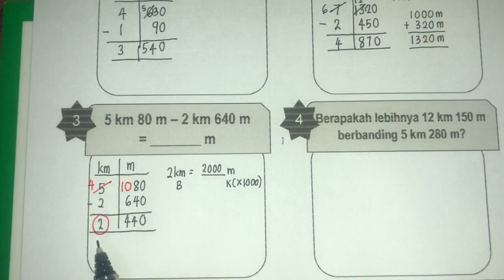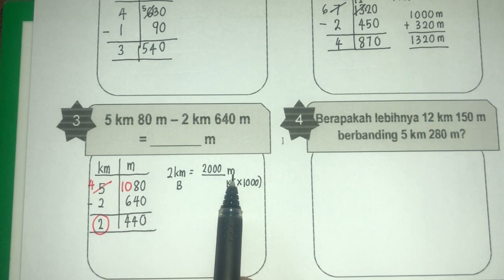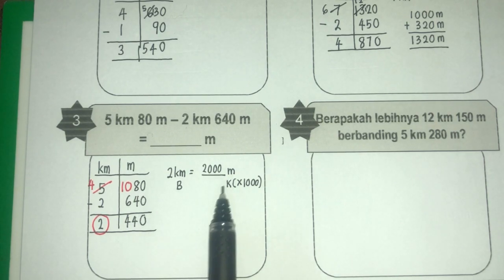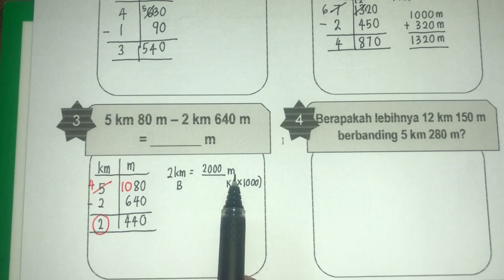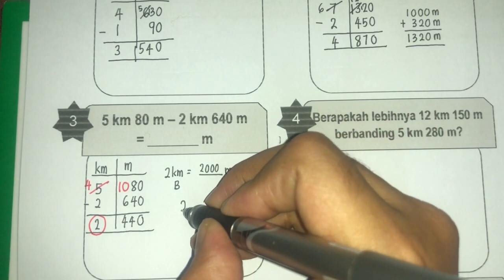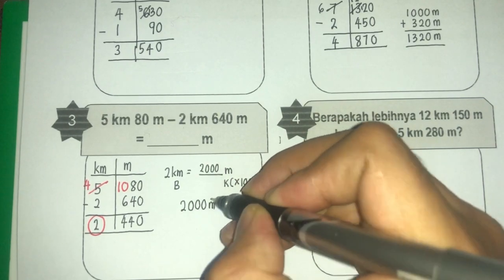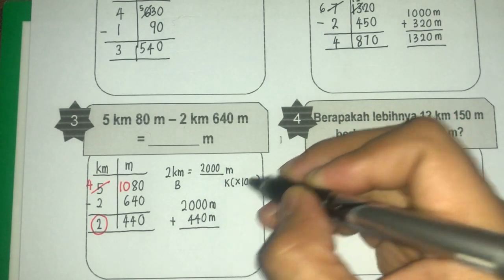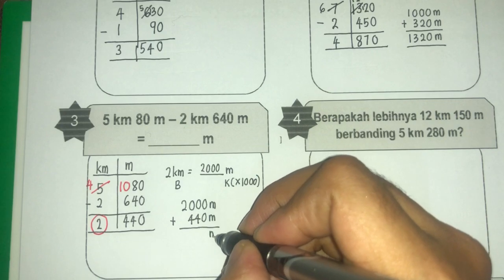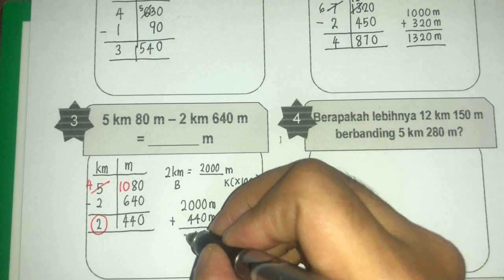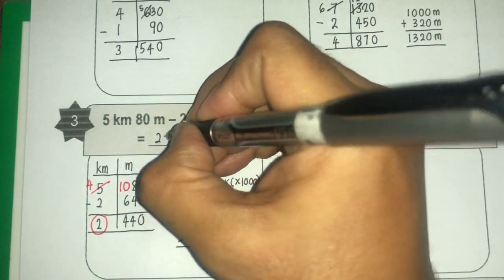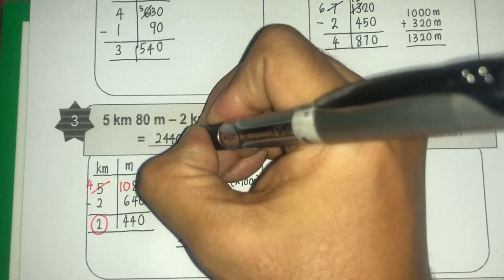Sekarang unit kilometer yang tadi 2 sahaja telah bertukar menjadi 2000 meter. Bila dah jadi 2000 meter, kita dah boleh tambahkan dengan 440 ni sebab unitnya dah sama — yang ni pun meter, yang ni pun meter. Jadi 2000 meter tambah dengan 440 meter. Unit dah sama, boleh tambah. Kosong, sini 4, sini 4, sini 2. Jawapan akhir ialah 2440 meter.